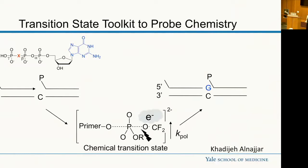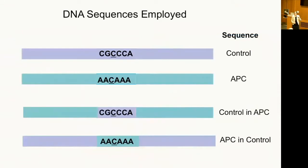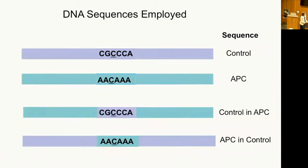We're going to probe the transition state with these analogs — and by the way, these analogs can also be polymerase inhibitors. We use four different sequences: a control sequence we know K289M does not mutate and is perfectly accurate in, which is the favorite sequence of X-ray crystallographers for Pol beta with thousands of crystals in the PDB; the APC sequence; and two chimeric sequences where we swap the central portion between control and APC. In all cases, we're inserting opposite template C, but the bases flanking that templating base differ.